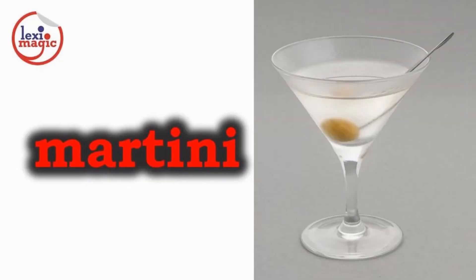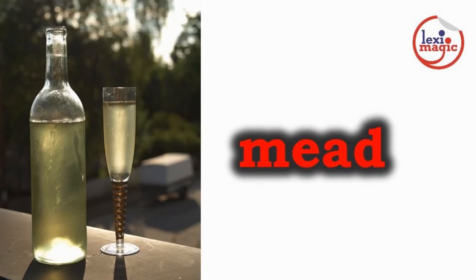Martini is a cocktail made of gin and vermouth and garnished with an olive or lemon sprig. The vodka martini, which is made with vodka instead of gin, is the preferred drink of the fictional MI6 spy James Bond. Mead is an alcoholic drink made from fermented honey. Mead was known to the ancient Greeks as ambrosia, which translates to the drink of the gods.